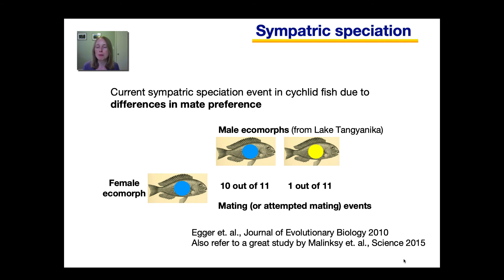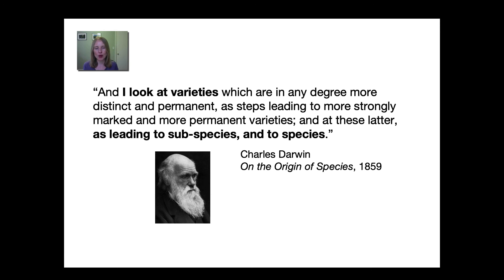They called them incipient species. Interestingly, Charles Darwin, back in the 1800s, already used that phrase 'incipient species.' Even though he did not have access to all of the data that we have now, he realized that speciation is still happening today. Here's one quote from his book On the Origin of Species: 'I look at varieties which are in any degree more distinct and permanent as steps leading to more strongly marked and more permanent varieties, and at these latter as leading to subspecies and to species.'